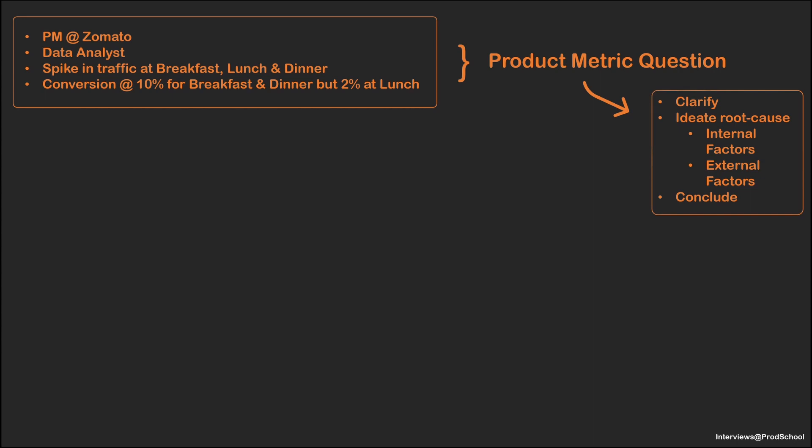Let me give you the approach I'll take. First, I'm going to make sure I understand the product correctly. Second, I'll focus on brainstorming possible root causes, where I'll take a MECE approach to the problem. Post that, we'll go deeper into the relevant issues to identify the root cause of our metric being so low. Sounds like a plan? Sounds good, go ahead.